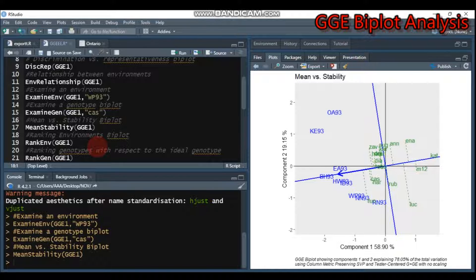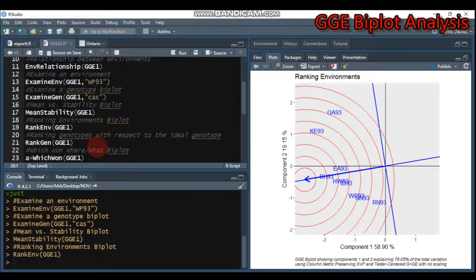If you want to rank environments biplot, you have to use rank.env. Rank.env means you are telling R to rank the environments. Type this and submit to R Studio, and you can get the rank of environments found in our data.